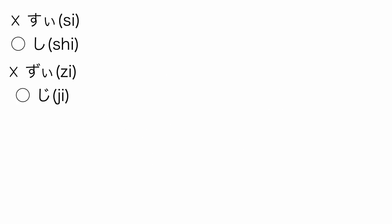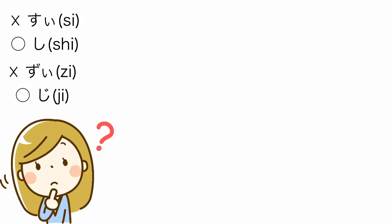So if you mispronounce し as すい, it sounds very strange to native Japanese speakers because すい does not exist in Japanese.